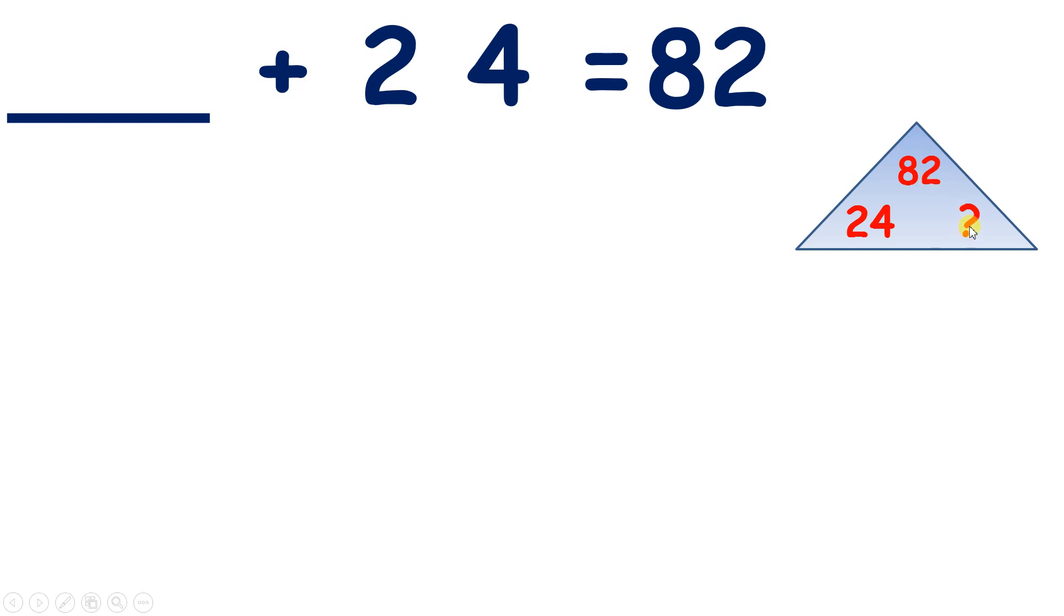But we don't know this number at the bottom. But there's a way for us to find out this other bottom number. What can we do? Well, with number family triangles, we know that if we subtract a bottom number from a top number, we get the other bottom number.